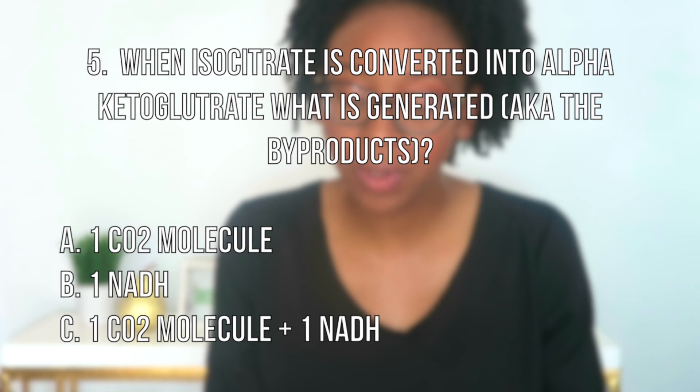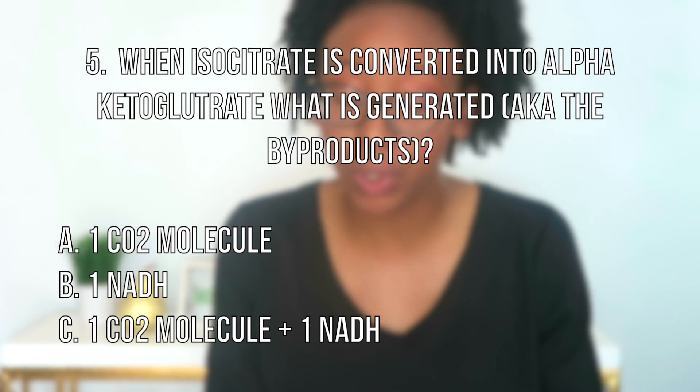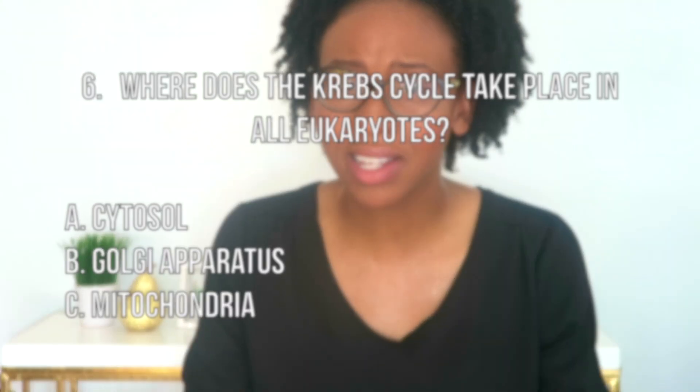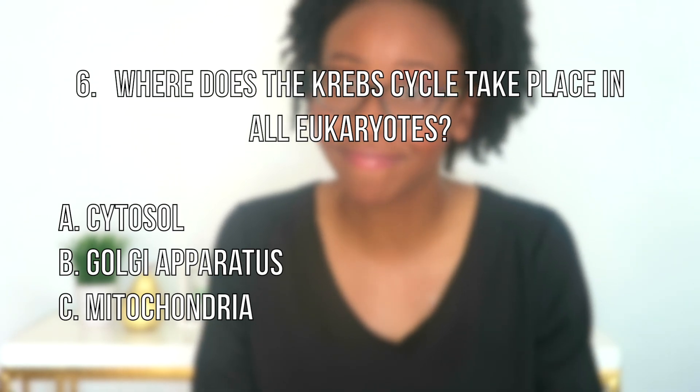Question number five: when isocitrate is converted into alpha-ketoglutarate, what is generated? If you mentioned one CO2 molecule and the reduction of NAD to NADH, you got it! Question number six: where does the Krebs cycle take place in all eukaryotes? If you mentioned the powerhouse — the mitochondria — that is correct.